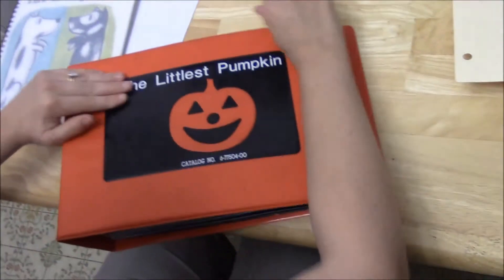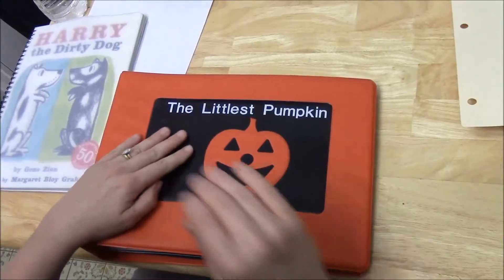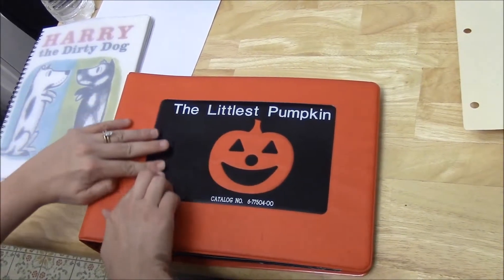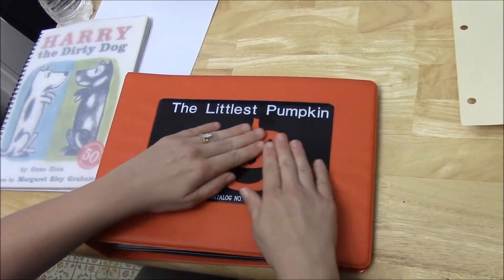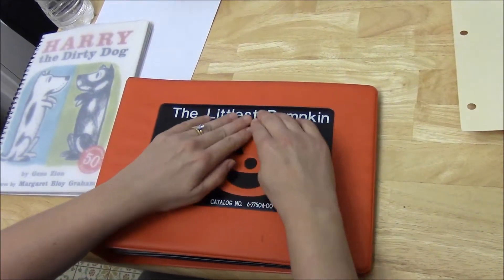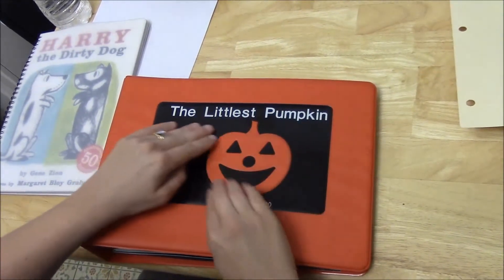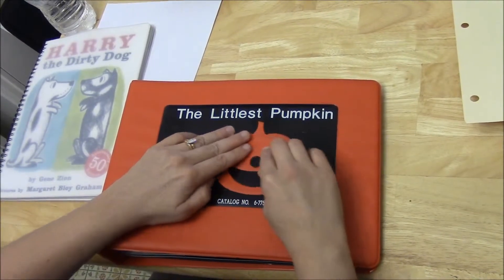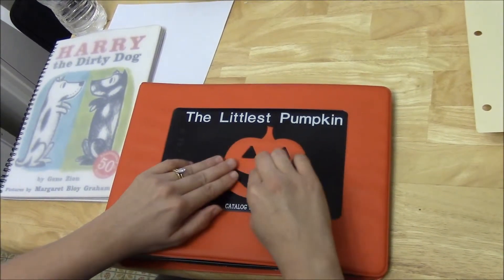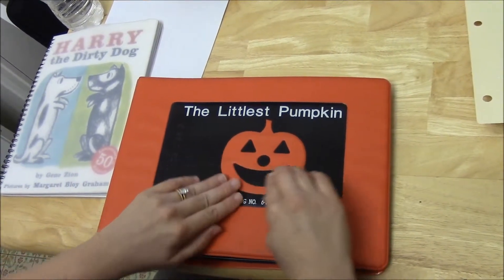This next book is called The Littlest Pumpkin. Here's the title, The Littlest Pumpkin, and you can see there's a pumpkin with the stem. Inside is a triangle eye, triangle eye, circle nose, and a smiley face for the mouth.